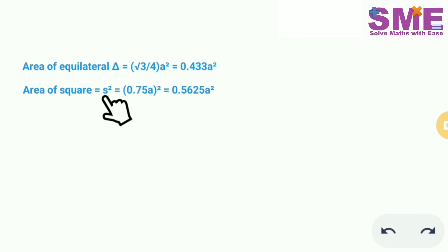Area of square is equal to side squared. Now we input the value of s in terms of a, and we get the value of area of square in terms of a as 0.5625a².